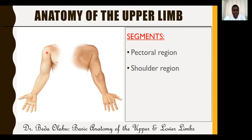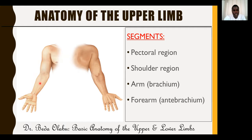Then you have the free upper limb extending downwards. From the shoulder to the elbow is what we call the arm, also known as the brachium. From the elbow joint to the wrist joint is the forearm, also known as the antebrachium. And this is the hand. The hand has two surfaces: the palm and the dorsum.